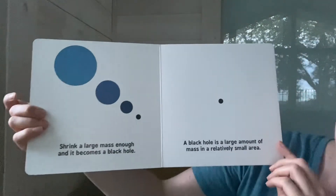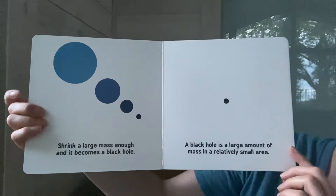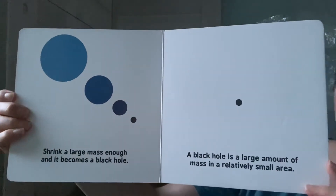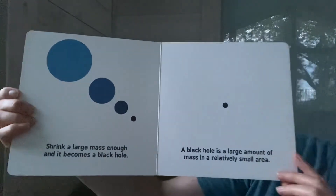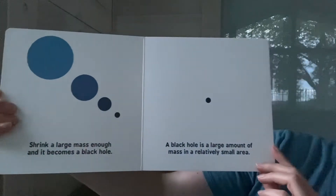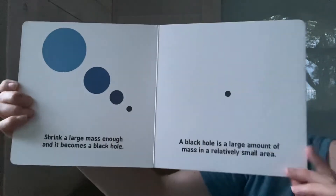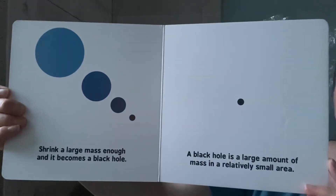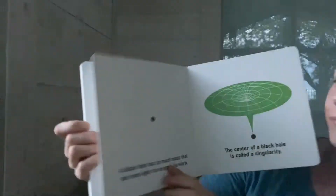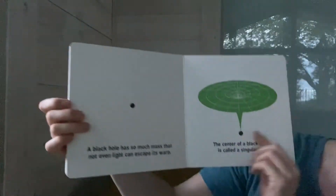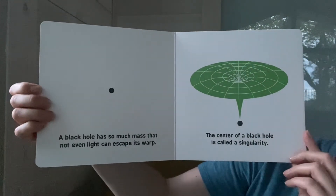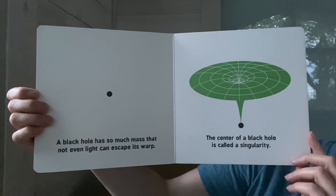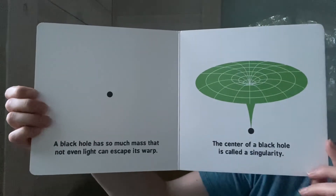A black hole. Shrink a large mass enough and it becomes a black hole. A black hole is a large amount of mass in a relatively small area. A black hole has so much mass that not even light can escape its warp.